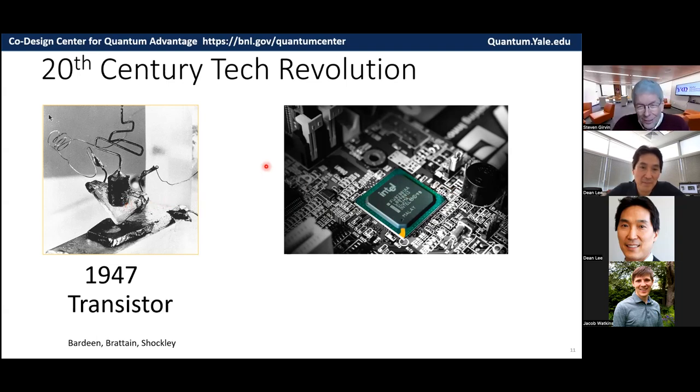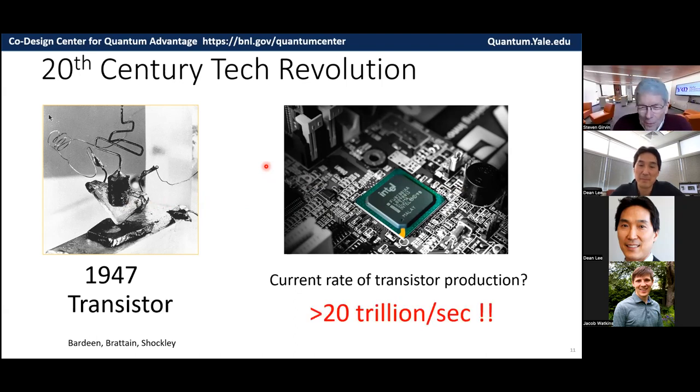And they certainly could not predict the rate of production of transistors in the world today. Every second of every day, the world produces more than 20 trillion transistors. It's just a mind-boggling number. All I can say is it's a good thing they're very, very small. Otherwise, we'd run out of stuff.